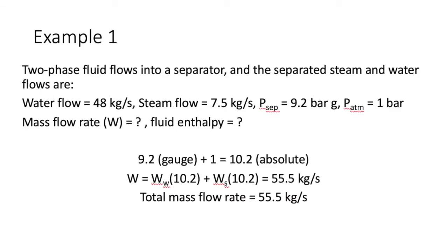A quick example from Chapter 8: two-phase fluid flows into a separator, and the separated steam and water flows are respectively 48 kg/s and 7.5 kg/s. The separation pressure is 9.2 bar gauge and atmospheric pressure is 1 bar. We are solving for the mass flow rate and fluid enthalpy. Since the separated steam and water flows are measured at the same pressure, they can be added together to get the total mass flow rate of 55.5 kg/s.